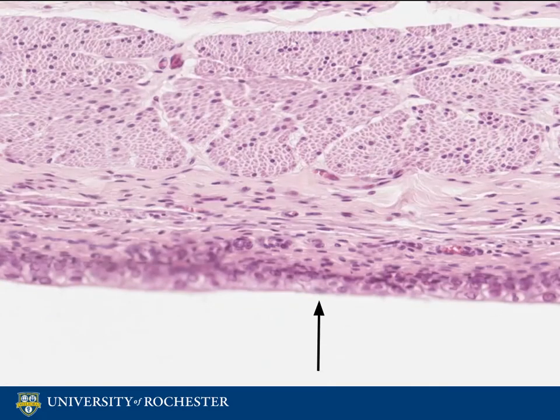If you scroll down the same slide, you will see a cut of another section of the bladder. Here you can see that in some places the transitional epithelium appears to be much thinner. If the bladder becomes distended, then the urothelium can be stretched out and ends up consisting of stratified squamous cells.